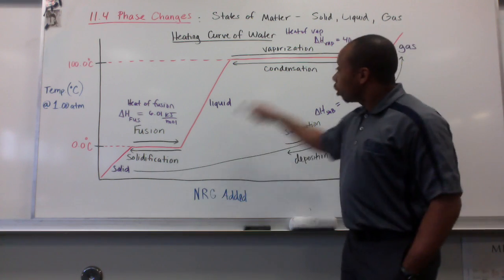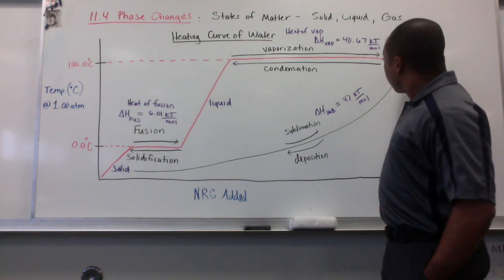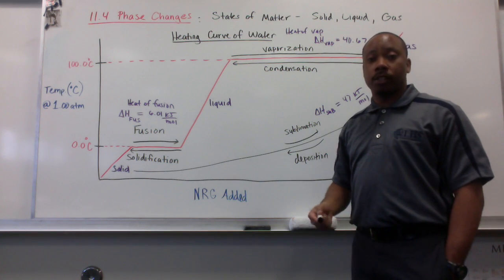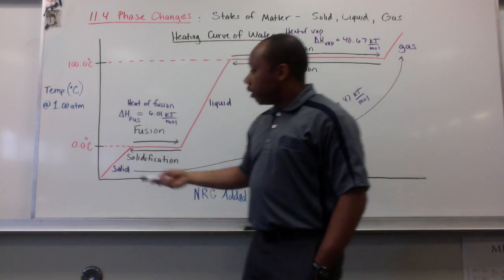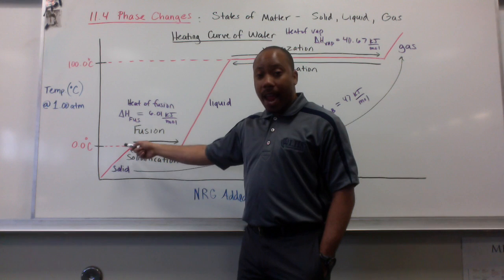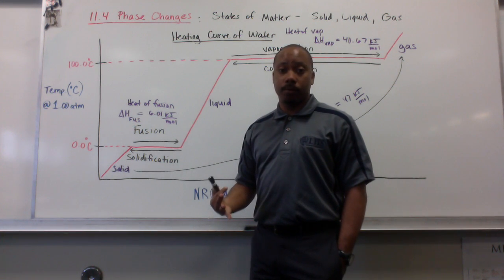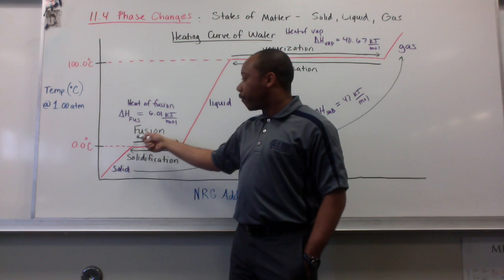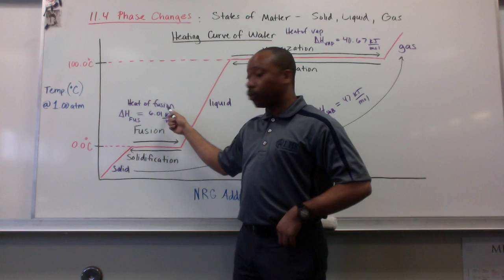Now, going from a solid to a gas is an endothermic process. It requires energy going from gas down to the solid direction is exothermic. You have to release energy for that. Speaking of energy, these changes in temperature and these phase changes require energy for them to take place. These phase changes, for example, fusion requires a specific amount of energy per mole. It's called the heat of fusion.